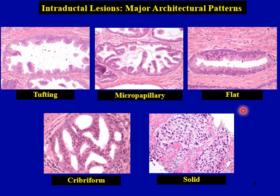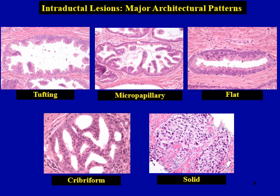In general, cribriform and solid architecture pose the most diagnostic difficulties and are typically associated with malignant processes, while tufting, micropapillary, and flat architecture are typically associated with high-grade PIN. I will show more examples of that later on.